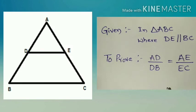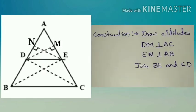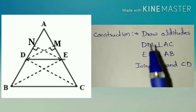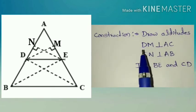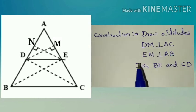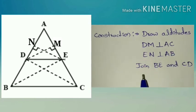We need to construct here. In construction first we have to draw the altitudes. So that will be DM perpendicular to AC and EN perpendicular to AB. And also join BE and CD.